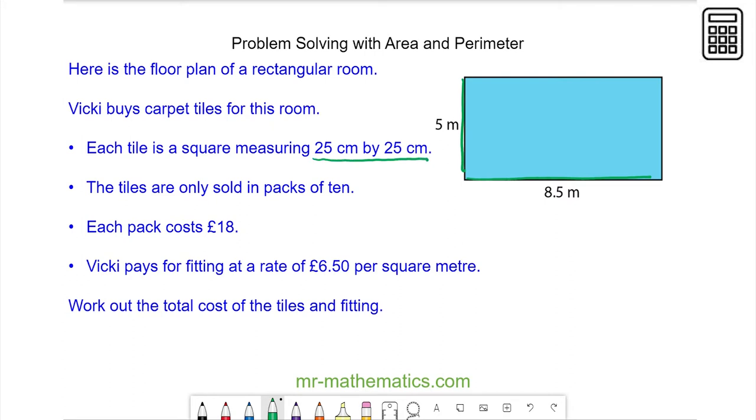To work out how many tiles will fill up the room, I'm going to use a rectangle in centimeters which is 850 by 500. To work out how many tiles go in this direction, I do 500 divided by 25, which equals 20 tiles. And in this direction we do 850 divided by 25.